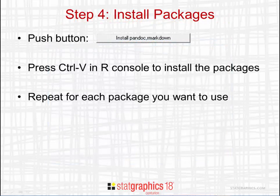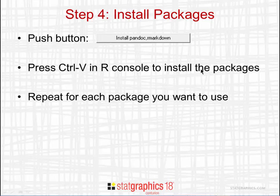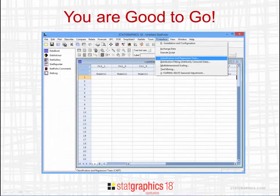To install a package, push the indicated button, which will bring you into the R console. Once in the R console, press Ctrl-V. This will paste certain commands into the console and cause R to install the desired packages. You need to repeat this process for each package you want to use. Once you've completed these four steps, you're good to go. You can now select R Interface from the StatGraphics menu and execute your desired statistical analysis.